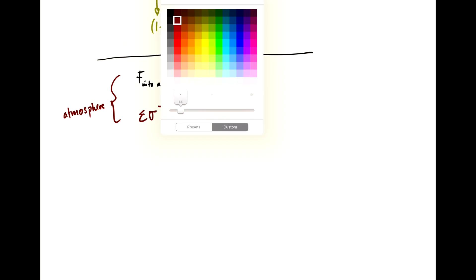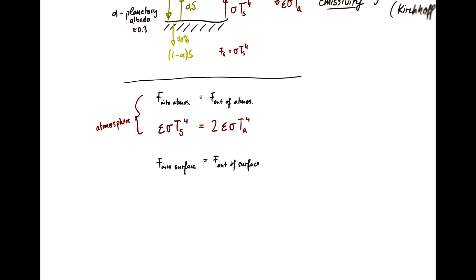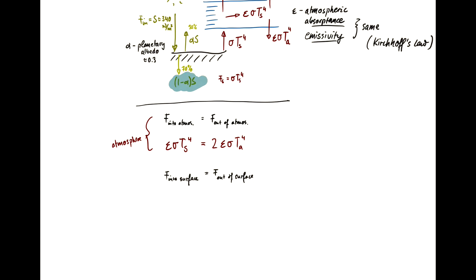We can write a similar equation for the surface. Flux into the surface has to be the same as flux out. What's coming in is the solar radiation (1-alpha)S plus epsilon sigma T_a to the 4th, balanced by the flux out, which is sigma T_s to the 4th.